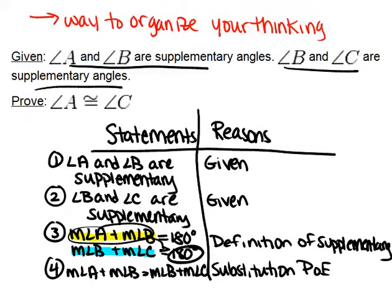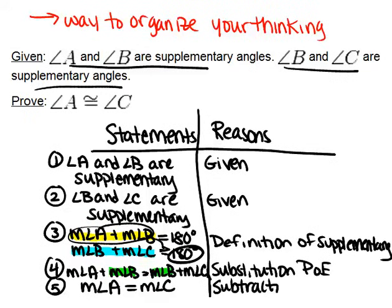The next thing we can do, because we have a measure of angle B on both sides, is subtract the measure of angle B from both sides. This gives us one more statement: the measure of angle A equals the measure of angle C. The reason for this step is the subtraction property of equality.